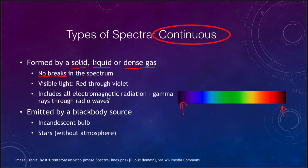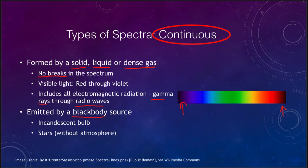Even though I'm showing visible spectrum here, it does include all electromagnetic radiation, from gamma rays through radio waves. In a visible spectrum we look at red through violet, but we could also look at radio or other types of electromagnetic radiation. These are emitted by black body sources — objects that emit light based only on their temperature — such as an incandescent light bulb or the surface of a star, which give off all energy based only on temperature.